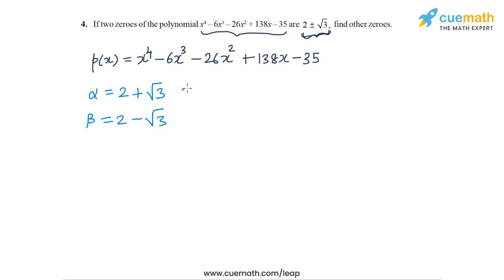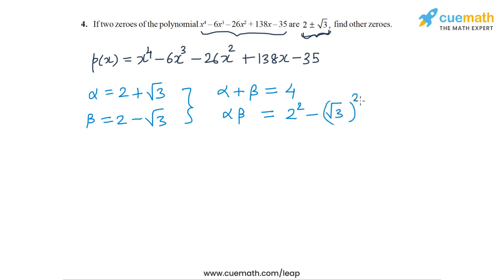The sum of these zeros is alpha plus beta, which is equal to 4. And the product of these zeros is alpha times beta, which equals 2 squared minus root 3 squared, or 4 minus 3, which is 1.